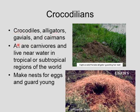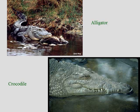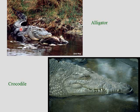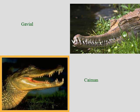The fourth group is the crocodilians, which includes crocodiles, alligators, gavials, and caimans. They are all carnivores, live near water, and are found in tropical or subtropical regions. They make nests where they lay eggs, and many guard their nests against predators. The difference between alligators and crocodiles is that alligators have a broader snout while crocodiles have a more triangular head. When a crocodile closes its mouth you can see many of its teeth; with alligators you see few or none.